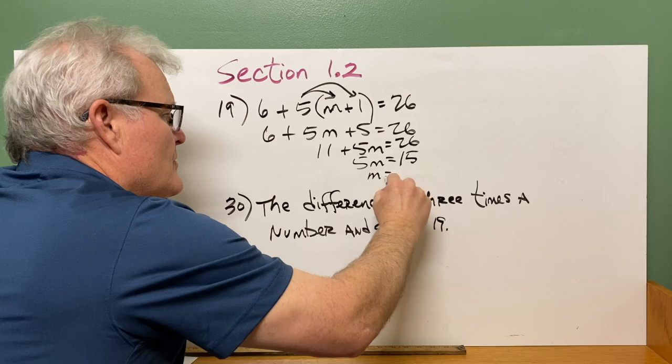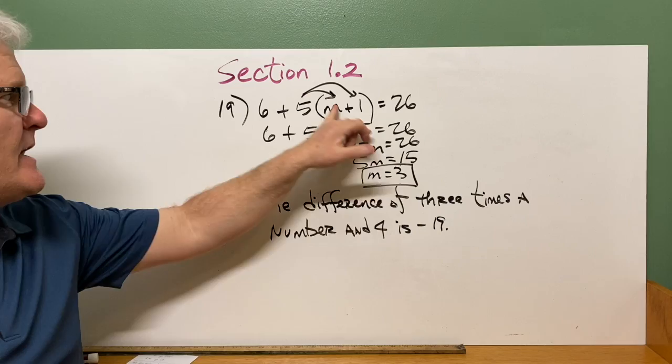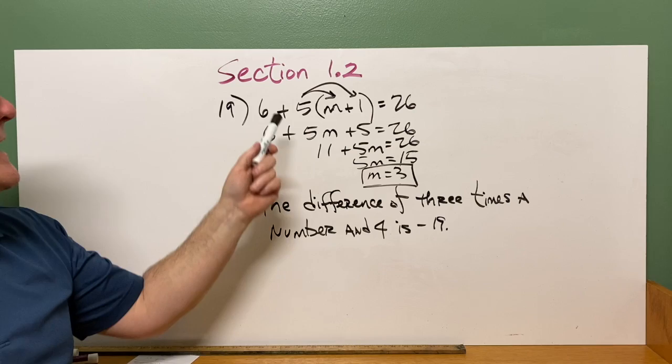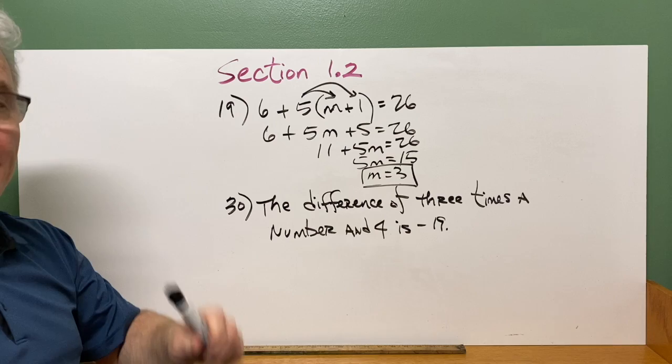The nice thing with this is you can take your answer and plug it in and see if it works. 3 plus 1 is 4. 5 times 4 is 20. 6 add 20 gives you 26. So you know you got the right answer. So you have several problems like that. So that should help.